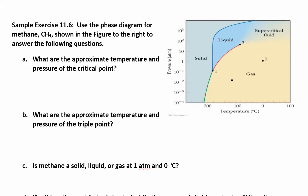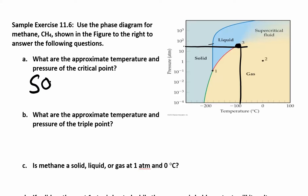Let's try one. Using the phase diagram for methane: what are the approximate temperature and pressure of the critical point? The critical point is at the end of the liquid-gas line — that's point number three. To read it off the graph, note the scale is logarithmic, going from 10 to 100 to 1000. The pressure is somewhere between 10 and 100, so approximately 50 ATM. For the temperature, working backwards from zero, you're at about negative 80 degrees Celsius.